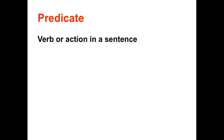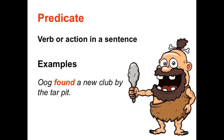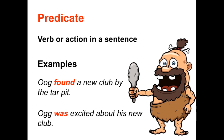Predicates are verbs or actions in a sentence. The words predicate and verb are pretty much interchangeable, but predicate refers to the structure of a sentence, and clauses are all about sentence structure. Here are some examples of predicates. 'Og found a new club by the tar pit.' The verb 'found' is functioning as the predicate in this sentence. 'Og was excited about his new club.' And the verb of being 'was' is functioning as the predicate in this sentence.